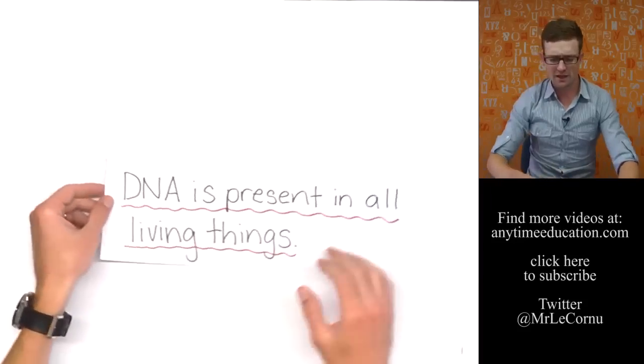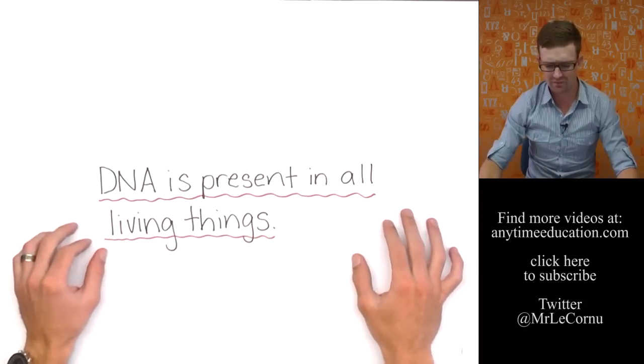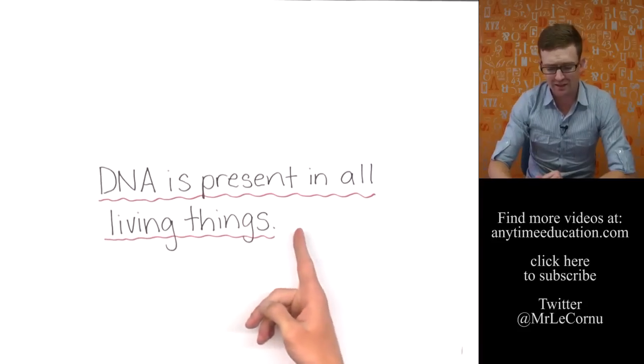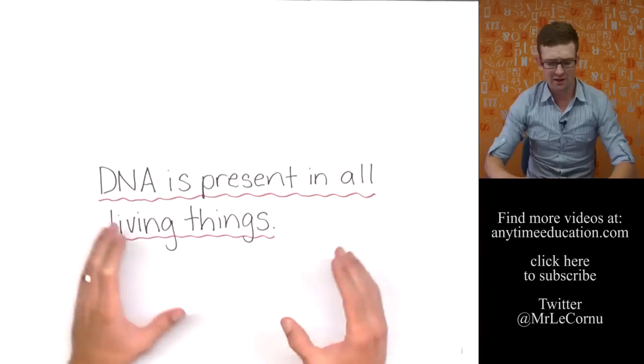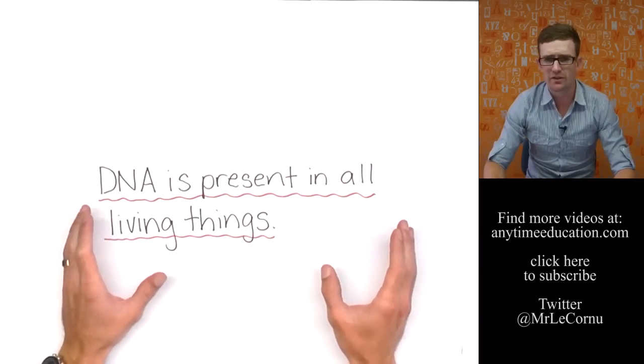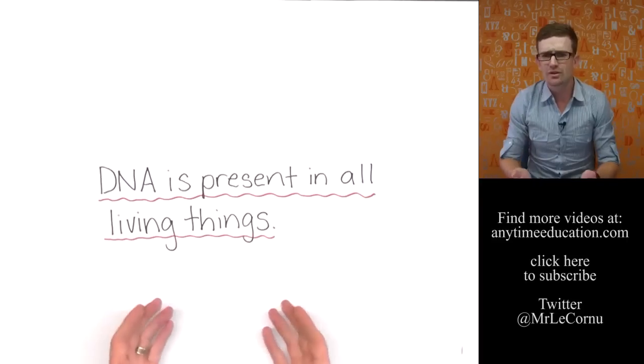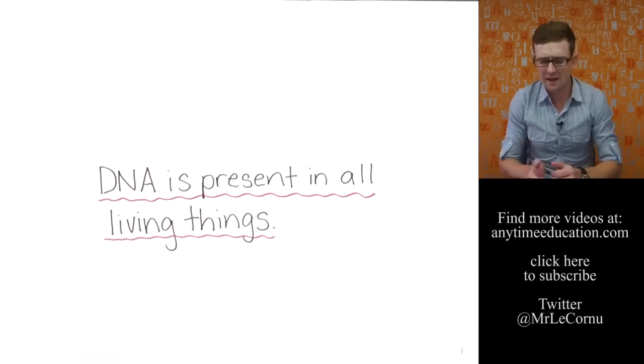So how do we use DNA as evidence to support our theory of evolution? Well, the first key bit of evidence is this - the fact that DNA is present in all living things is a very good piece of evidence to support evolution. Now, we'll come back to this piece of evidence later, but first of all, let's have a look at how DNA has come to be in all living things.